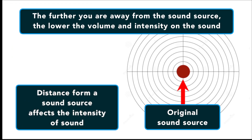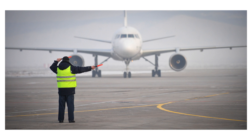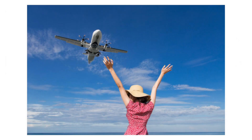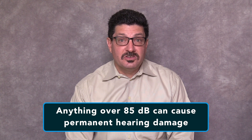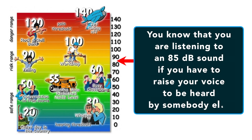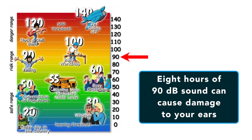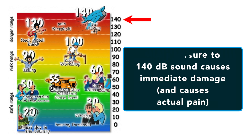Distance affects the intensity of sound — if you are far away, the power is greatly diminished. All the ratings mentioned are measured when you're standing right next to the sound source. A plane's jet engine will blow out your eardrums if you're standing next to it, but if you're five miles away it'll sound much quieter. The important thing to remember is that anything over 85 decibels can cause permanent hearing damage. The loss is related to both the power of the sound and the length of exposure. Eight hours of 90 dB sound can cause damage; any exposure to 140 dB causes immediate damage and can cause pain.